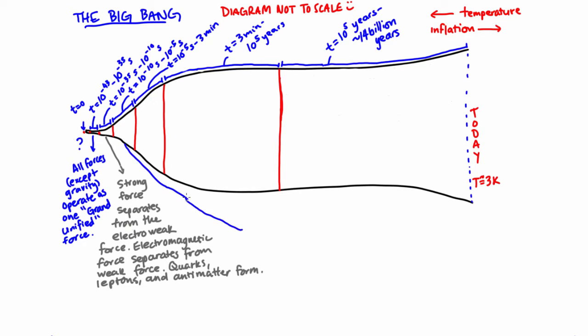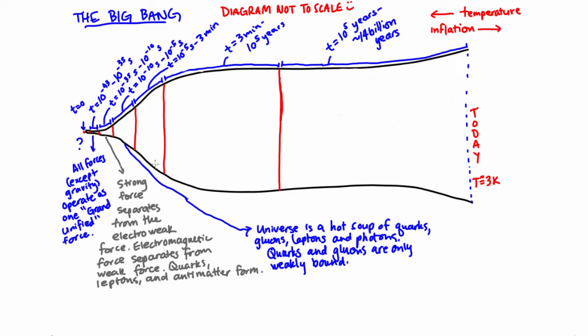From 10 to the minus 10 seconds to 10 to the minus 5 seconds, the universe consists of a hot mix of quarks, gluons, leptons and photons. In this incredibly hot soup, quarks and gluons were only weakly bound, so quarks could float around freely in space without the constraints they typically suffer today.